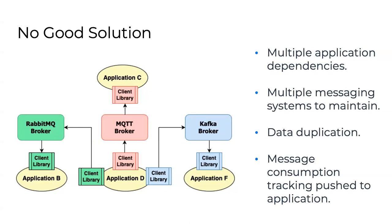There's really no good solution here. One approach is having one application maintain multiple client libraries — sending a copy to MQTT, one to Kafka, one to AMQP. But then you have to know ahead of time who your consumers are, creating tight coupling. You end up with multiple application dependencies, data duplication, and still multiple messaging systems to maintain. And last but not least, you can't track who consumed your messages and when — data lag, latency, visibility all get lost.